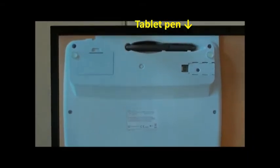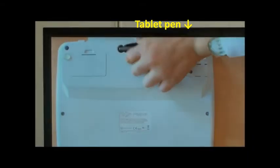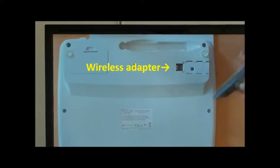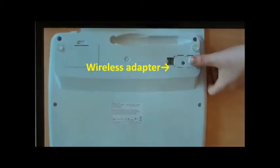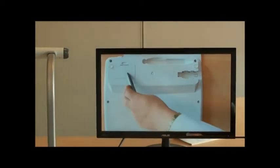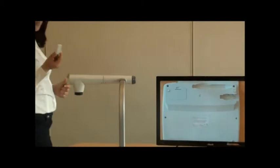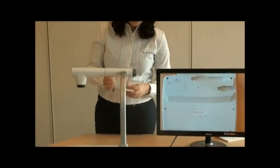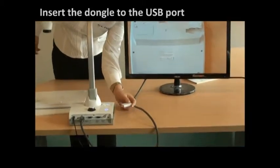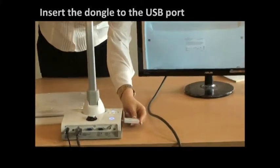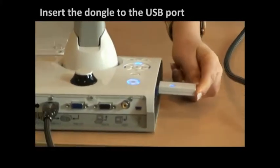As you can see here on the back side of the tablet, we have the tablet's pen, we have the dongle, and finally we have the battery that is inserted in here. I will start by inserting my dongle on the document camera, just insert this USB here.